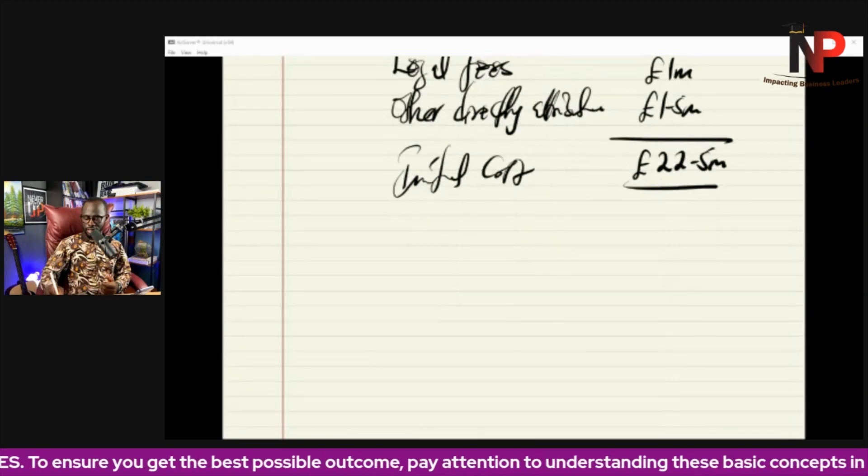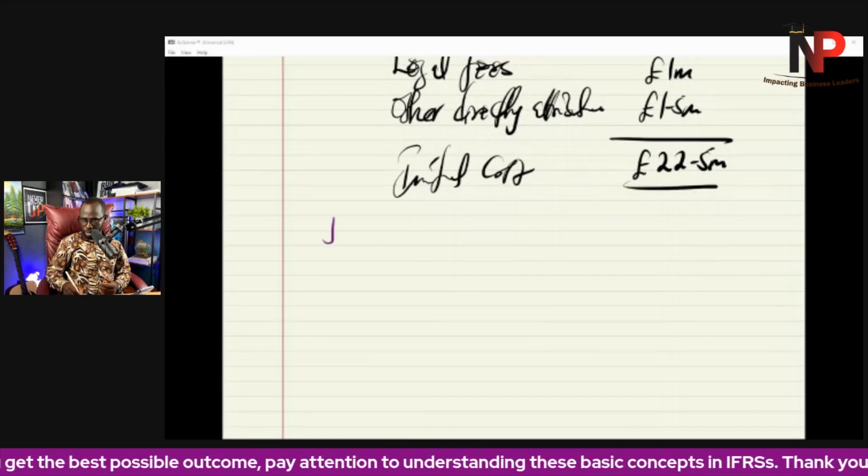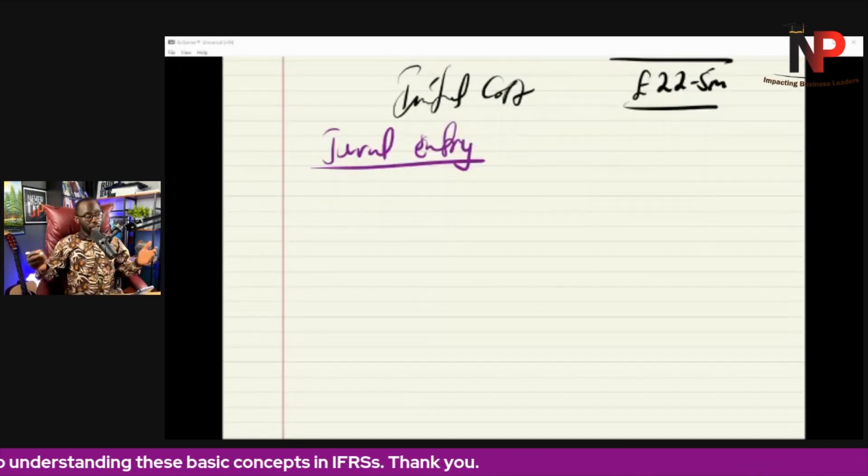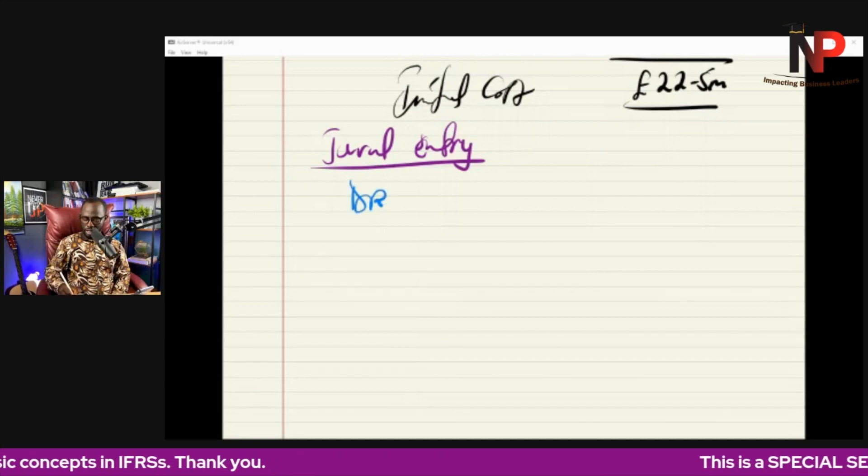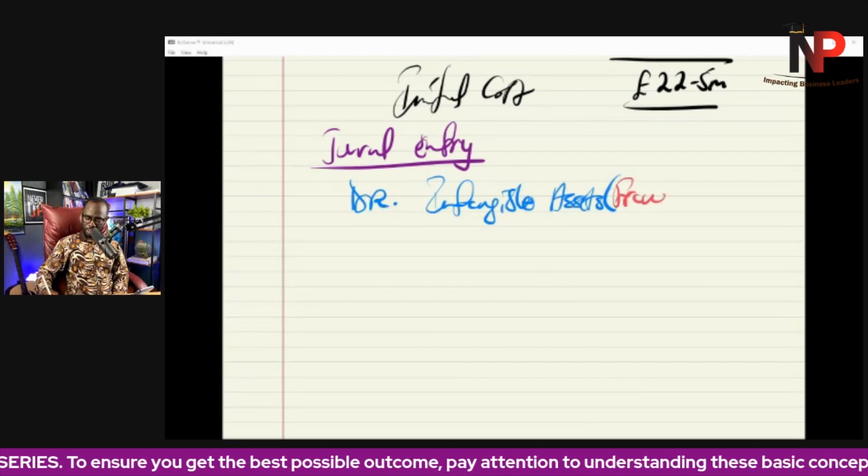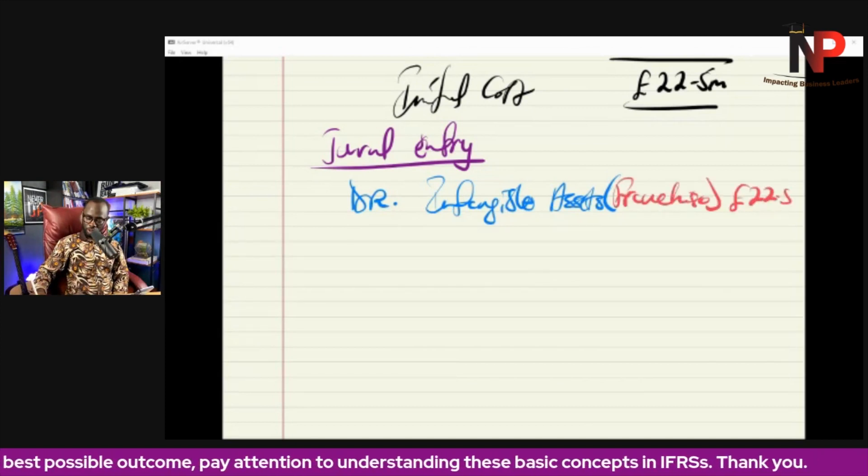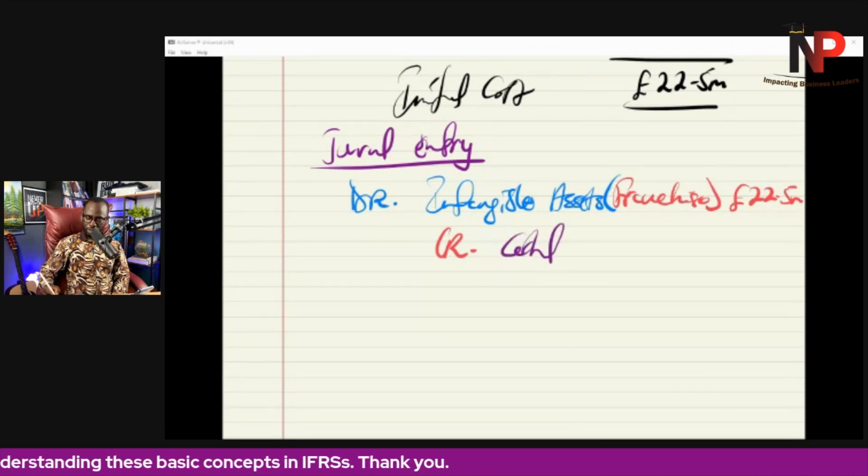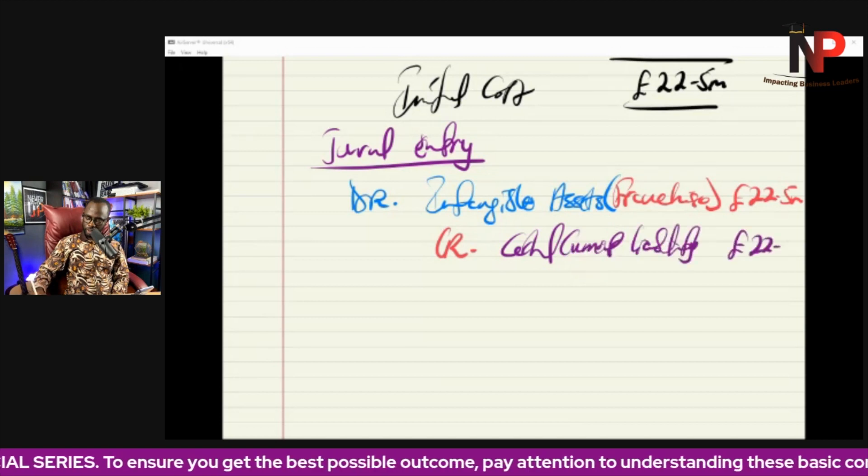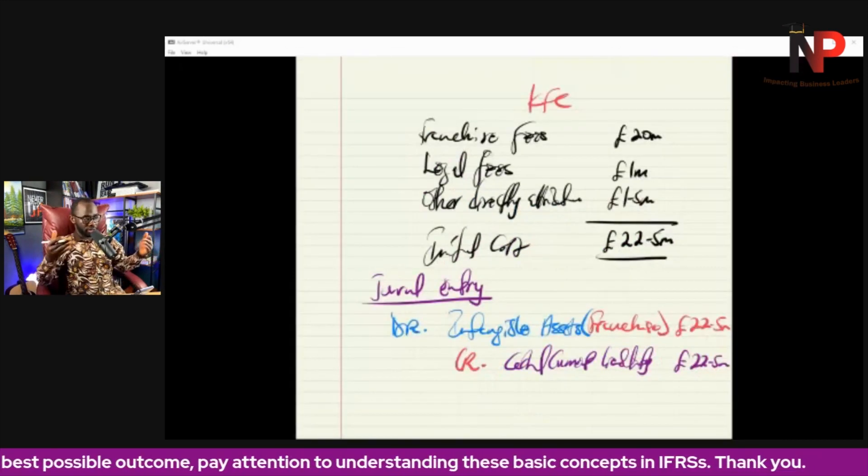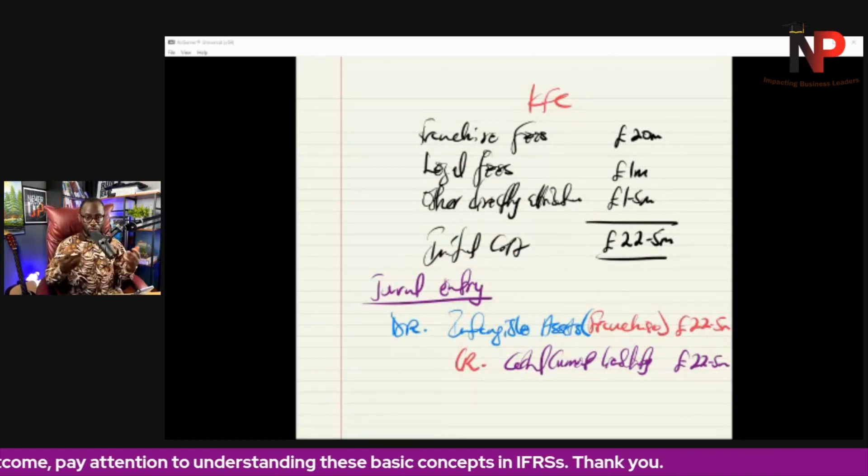So here, the general entry is going to be pretty simple. We bring up the general entry and it will be to debit intangible assets - that's the franchise that we bought with 22.5 million. And then credit cash, if we have made all these payments, or maybe payables if it is outstanding, 22.5 million. That is the initial measurement, the initial recognition of intangible assets.